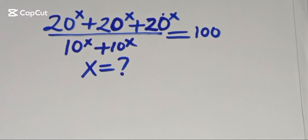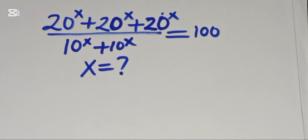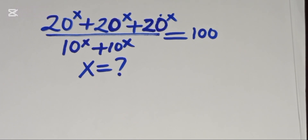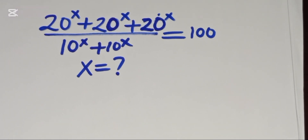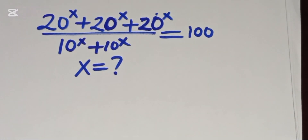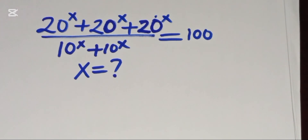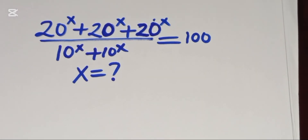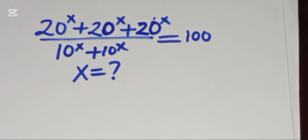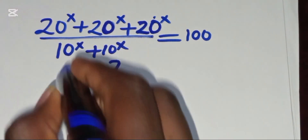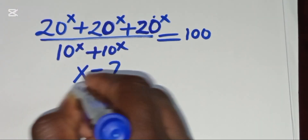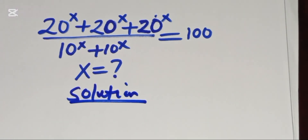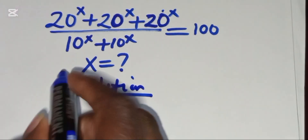Hello YouTube family, welcome back. Let's provide a solution given this exponential equation: 20 to the power x plus 20 to the power x plus 20 to the power x, divided by 10 to the power x plus 10 to the power x, is equal to 100. What is the value of x?